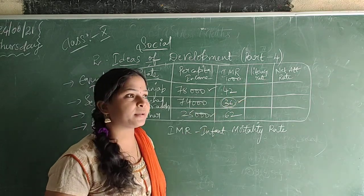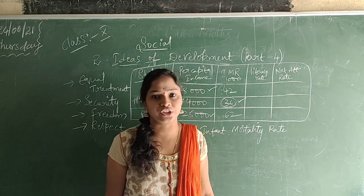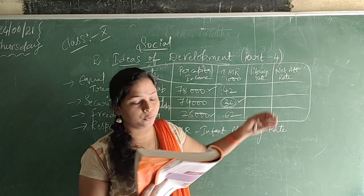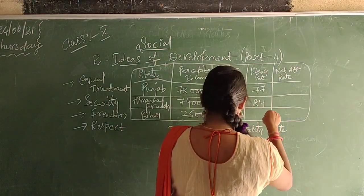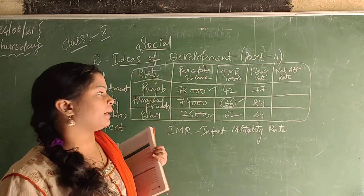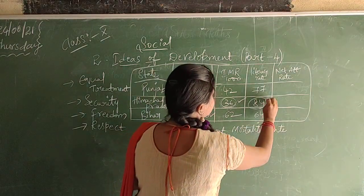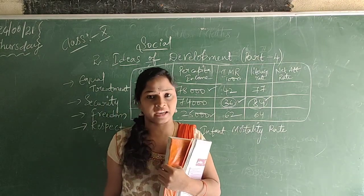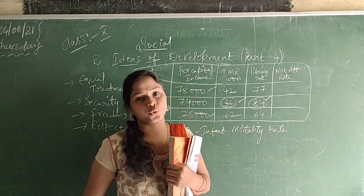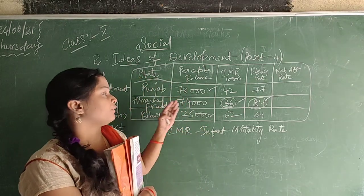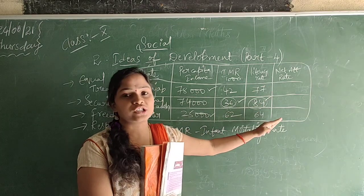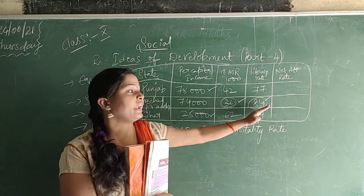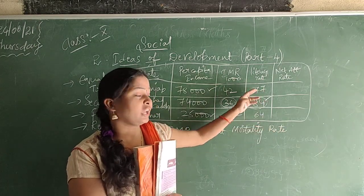Coming to the literacy rate — what is the meaning of literacy? Education. As per the 2011 census, they gave you literacy rates of 77 for Punjab, 84 for Himachal Pradesh, and 64 for Bihar. Comparing these three states, again Himachal Pradesh has the highest literacy rate at 84%. Why? Because the Himachal Pradesh government is taking proper care of children's education and health. That is why the infant mortality rate is low and the literacy rate is high compared to the other two states. So we can question the Punjab government — income is 78,000 but literacy rate is low. Why? Because they are not taking proper care of the facilities of the people.